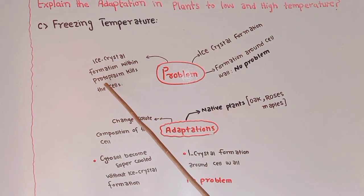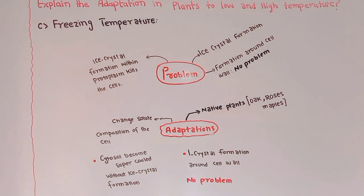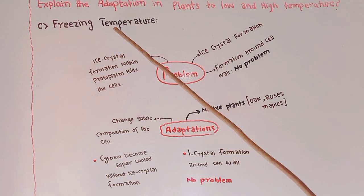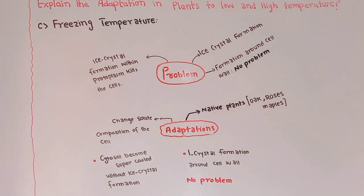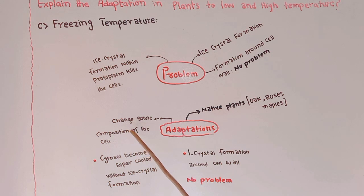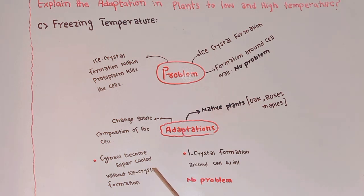Ice crystal formation within the protoplasm kills the plant cells because it changes the fluidity of the cell membrane and also changes the solute composition. To overcome this problem, plants adapt themselves to survive in freezing temperature environments. They change their solute composition in the cell, causing the cytosol to become supercooled, so ice crystal formation does not occur within the protoplasm.